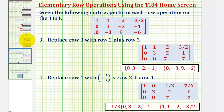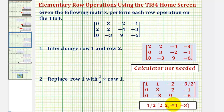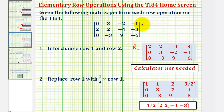In red, the row operations have already been performed — we'll duplicate these on the calculator. Except for the first one, to interchange row one and row two, we don't need a calculator. We just interchange the two rows, meaning row two in the original matrix becomes row one, and row one becomes row two.